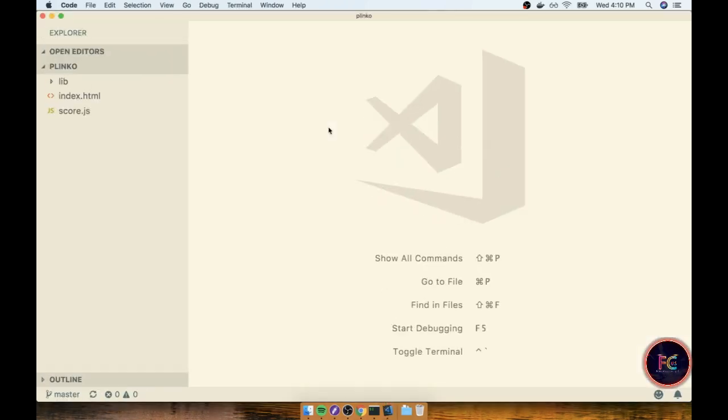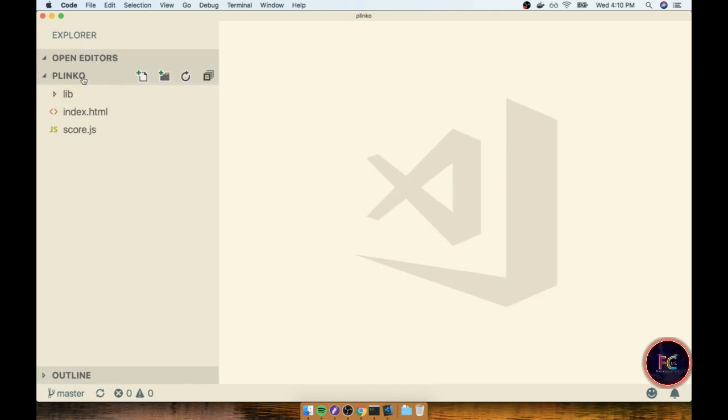Okay here we go. So again I'm inside the Plinko folder. I see the lib directory, index.html, and score.js. Let's open up that score.js file.